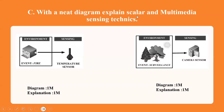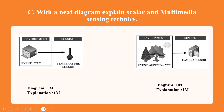Finally, with a neat diagram, explain scalar and multimedia sensing techniques. For scalar sensing, draw the diagram using fire as an example, where a temperature sensor measures temperature when a fire is happening — the diagram is 1 mark and the explanation is 1 mark. For multimedia sensing, use a surveillance camera as the event and explain how it has been sensed — the diagram is 1 mark and the explanation is 1 mark — for a total of 4 marks.